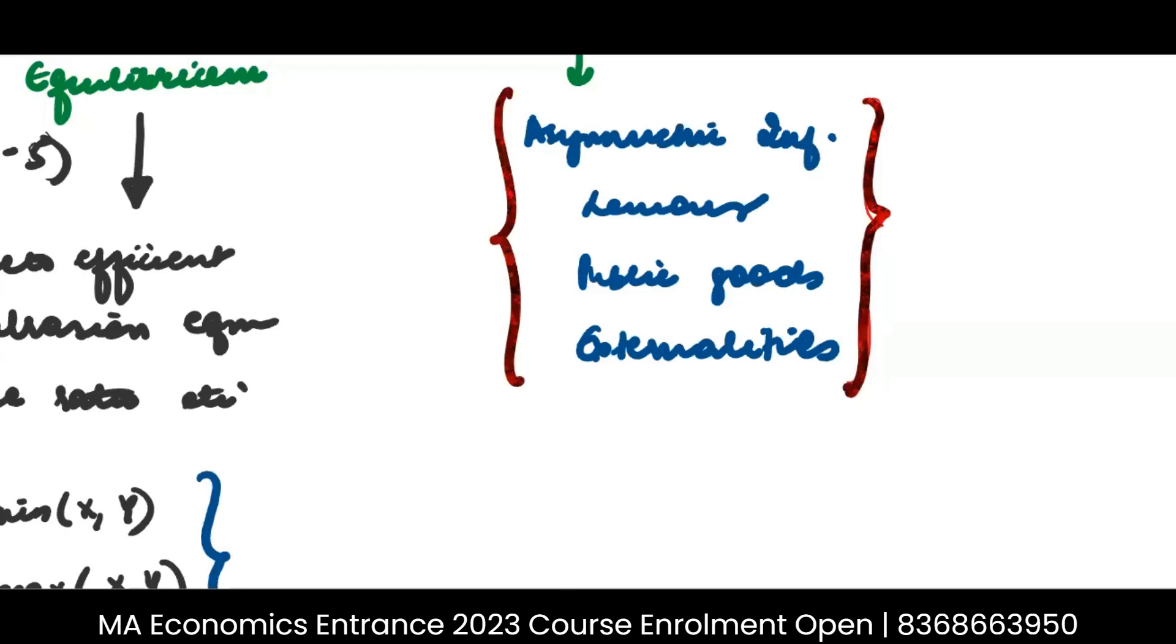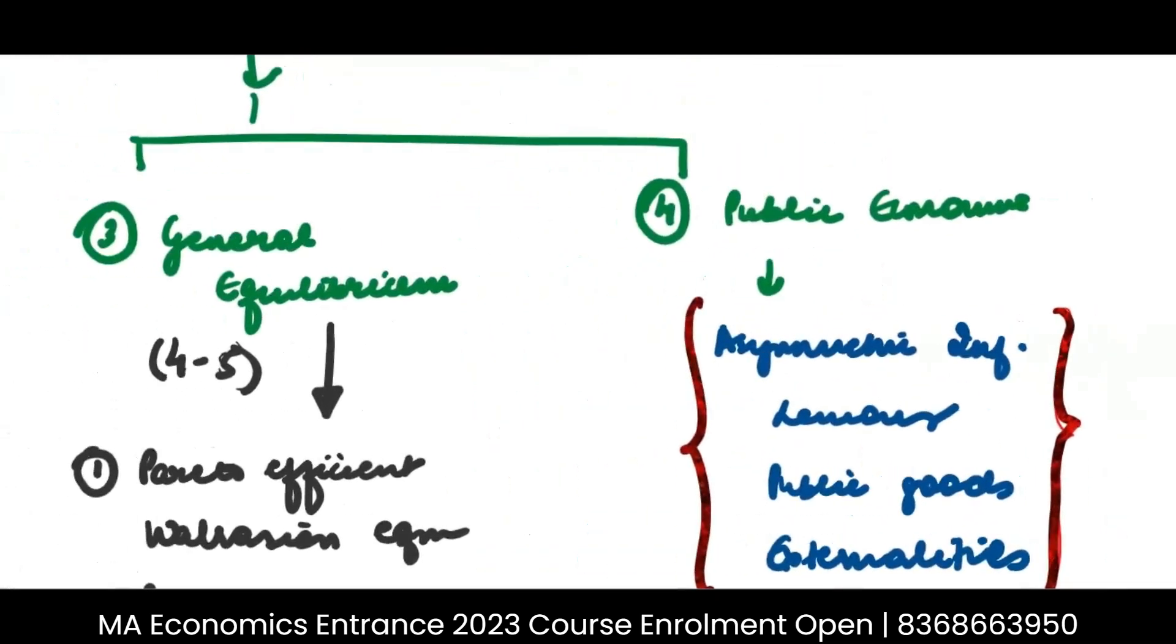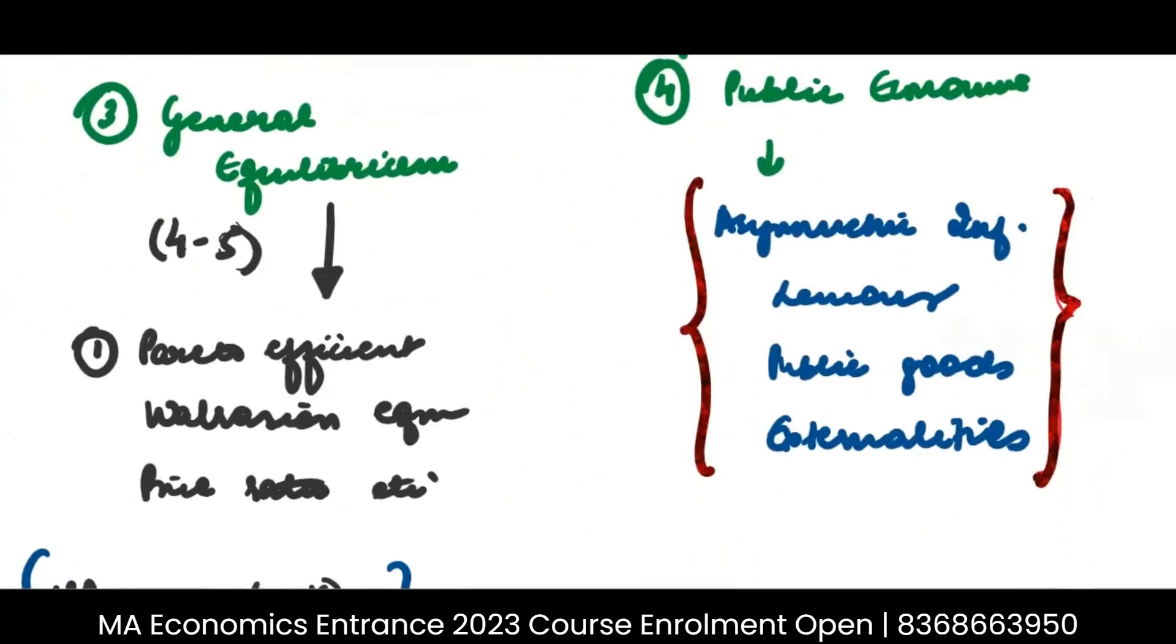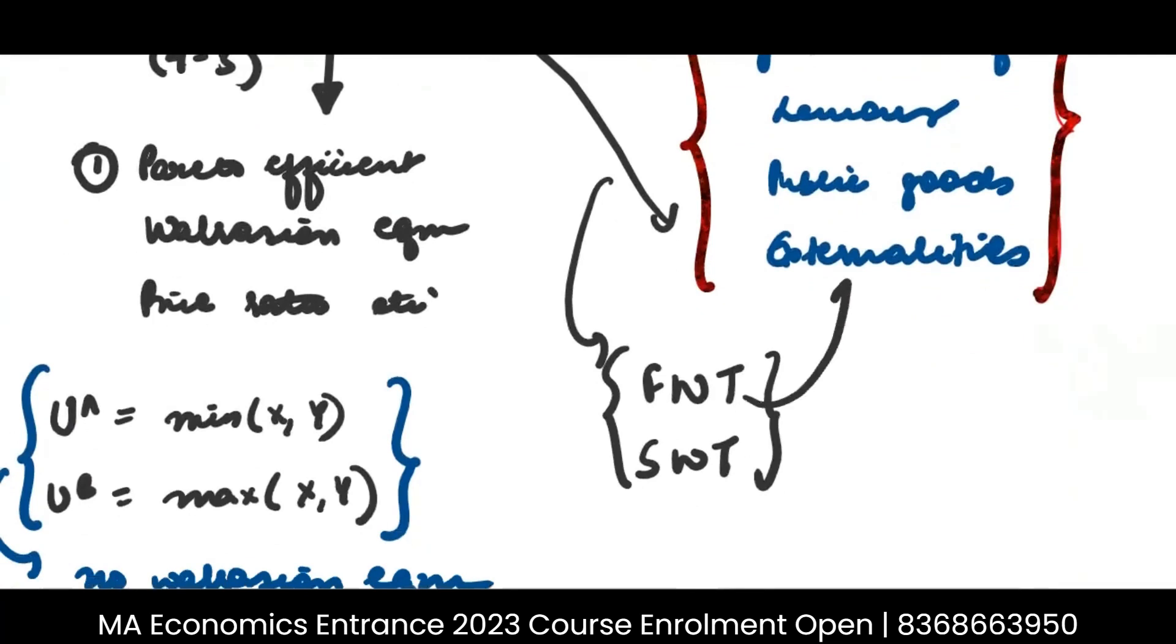But there was one question which merged the concept of externalities to the concept of general equilibrium. And how can we merge the two? We know that. The only way to link these two things is to understand through first welfare theorem and second welfare theorem. Because we know under what conditions first welfare theorem does not hold true. And then from there only we introduced the concept of externalities also into being. That is where you can go ahead and you can consider these examples.